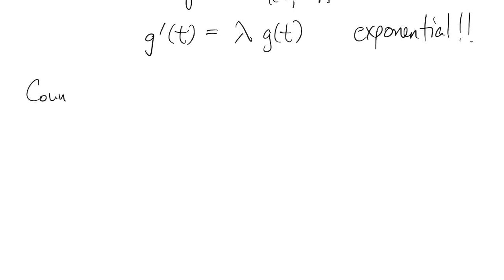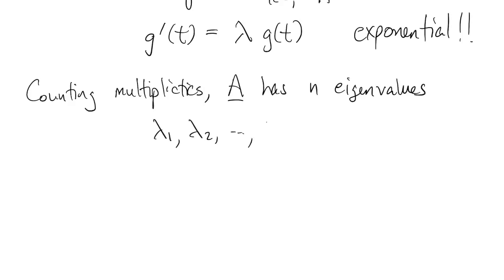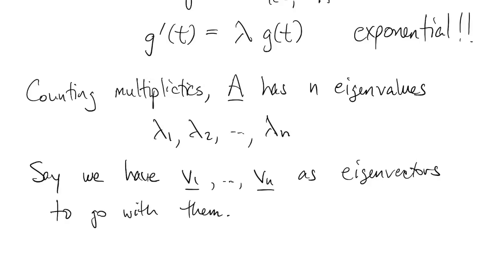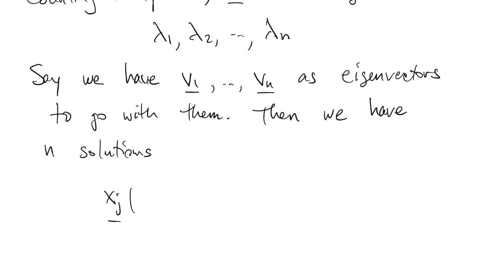Let's look at the bigger picture. If we count multiplicities, then a, which is n by n, has n eigenvalues. So let's call them lambda 1 up to lambda n. Let's say we have eigenvectors to go with them. So v1 to vn, right, vj goes with lambda j. Then we have n different solutions to the homogeneous problem. X1 is equal to e to the lambda 1t times v1, et cetera. In general, xj is e to the lambda jt times vj for all the different possible values of j.